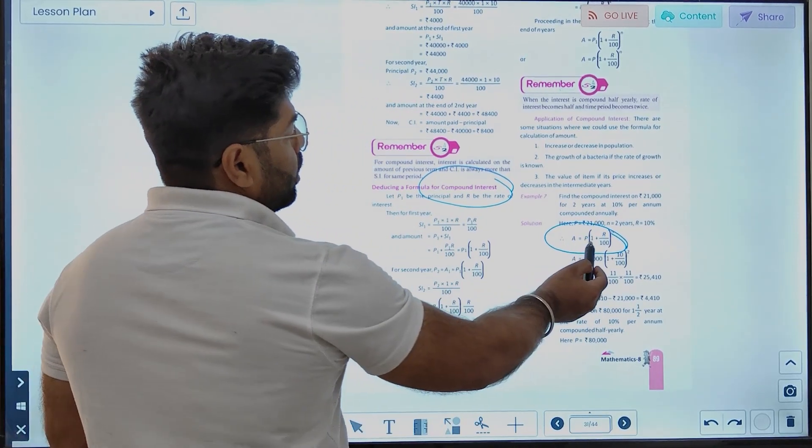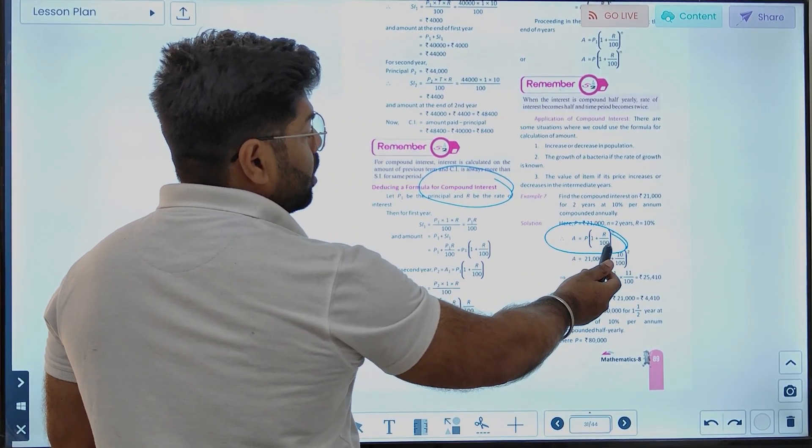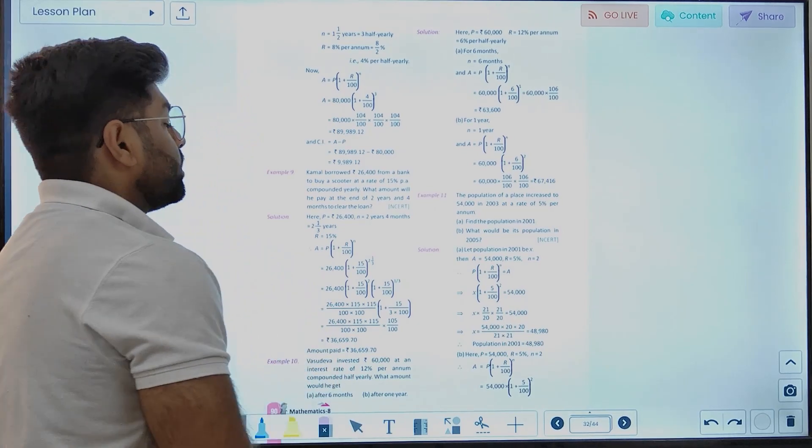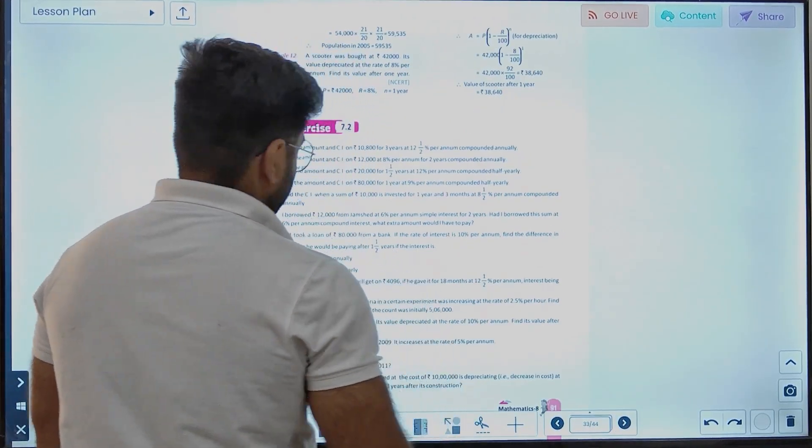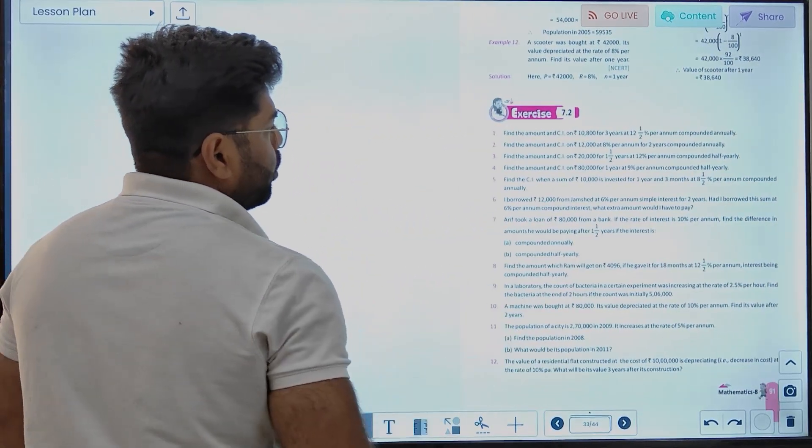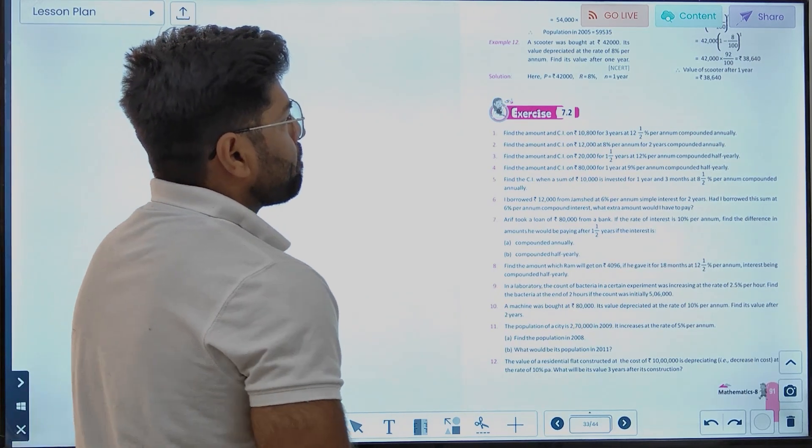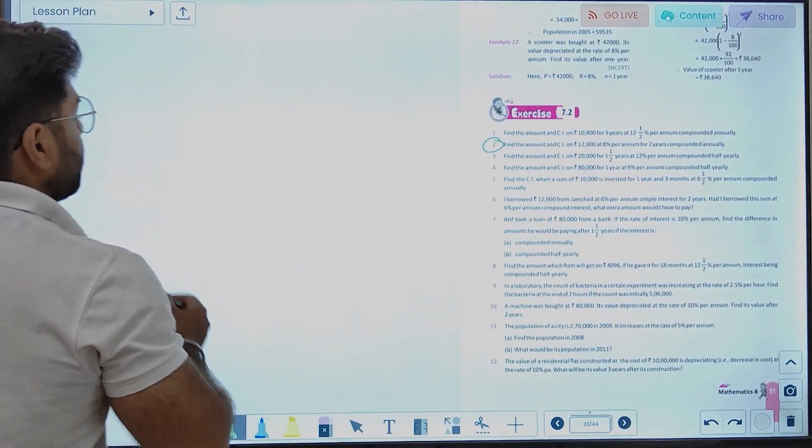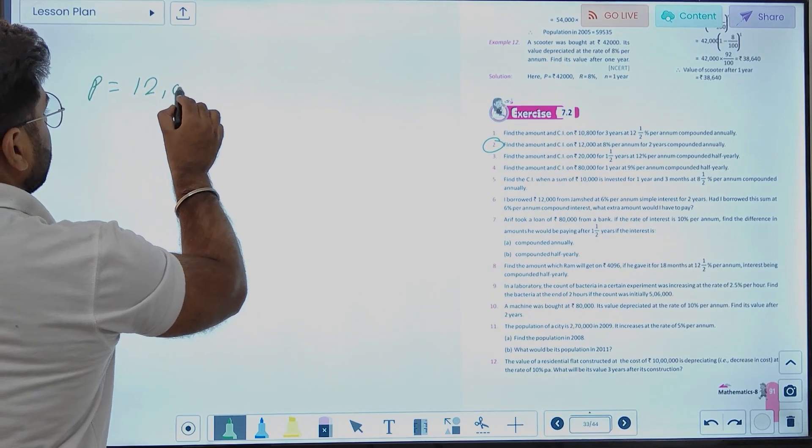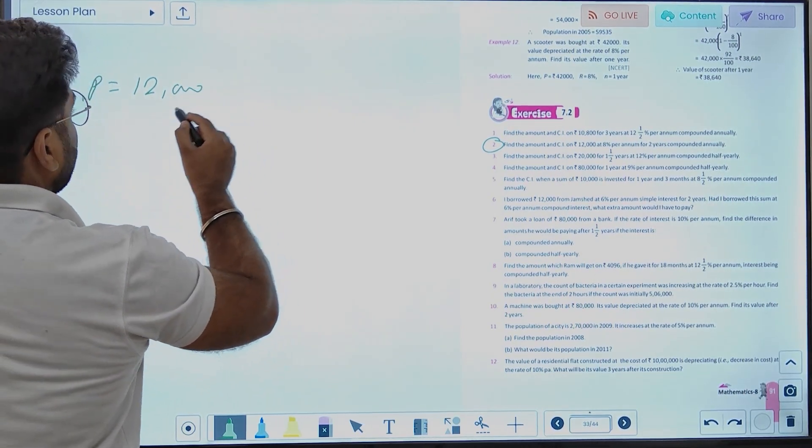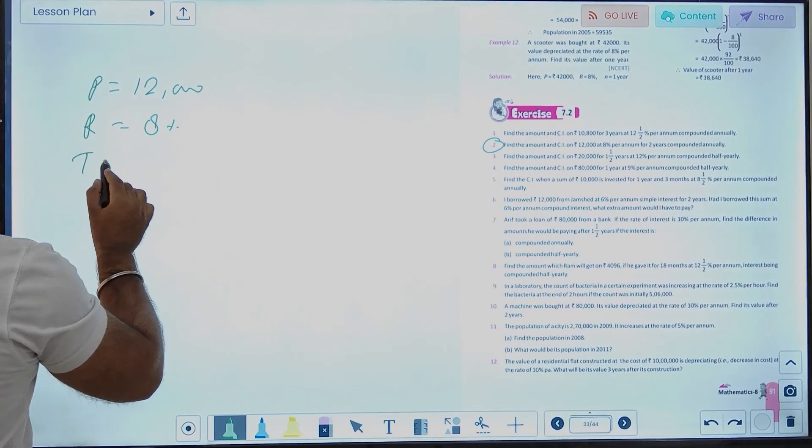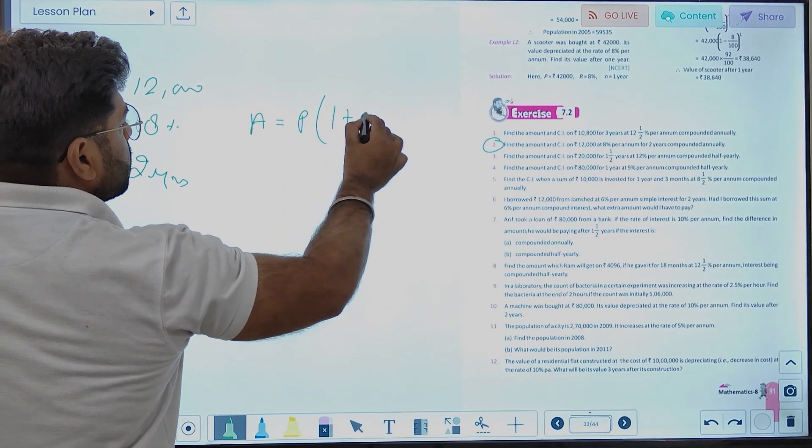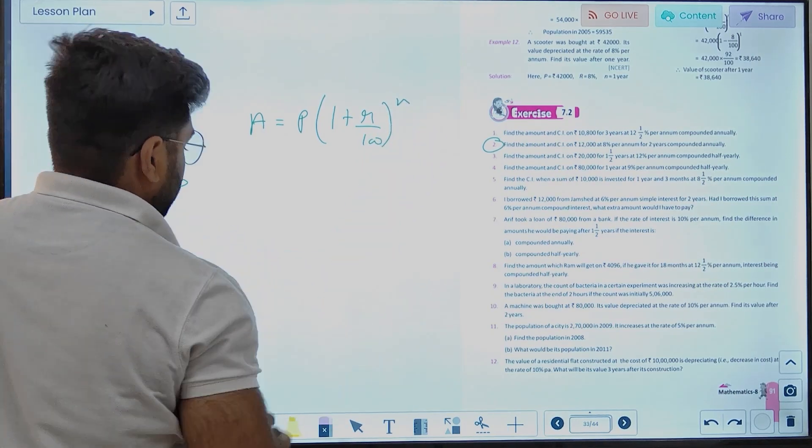The formula is: Amount equals P times (1 plus R upon 100) to the power of N. P is the principal, R is the rate of interest, N is the number of years. The amount will be calculated using this compound interest formula. First of all, the amount will be calculated, then we subtract principal to get compound interest.